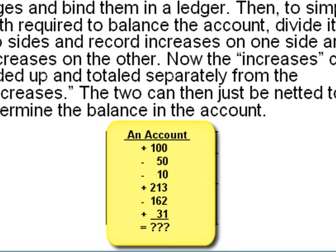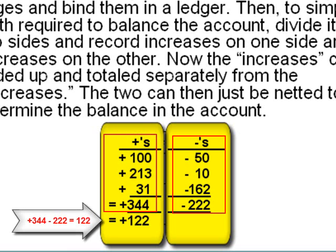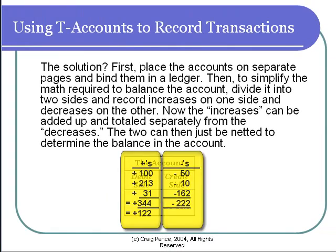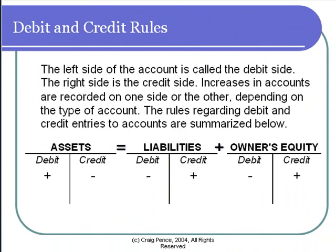So a solution was to divide the account into two sides. On one side, record all the increases; on the other side, record all the decreases. At the end of the period, all you'd have to do is add up the increases column, add up the decreases column, and then net the two out to get the overall balance. This simplifies the math quite a bit. The left side of the account is the debit side; the right side is the credit side. When you divide the page into two sides, you form a little T, and these kinds of accounts are referred to as T accounts.